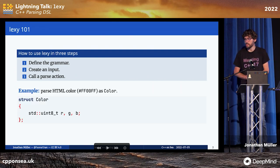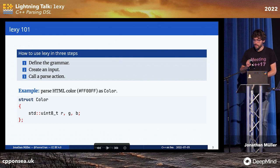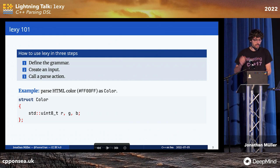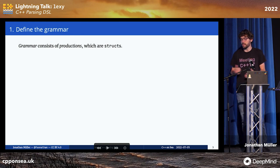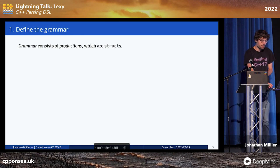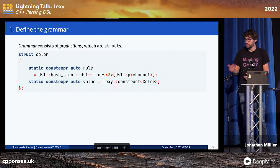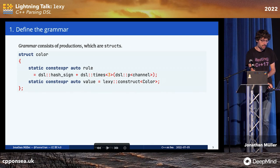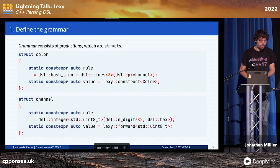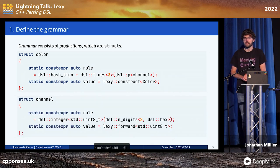We want to parse HTML or CSS color codes using hex notation into a struct. The first step is to define the grammar. A grammar in Lexi consists of productions, which are structs with a special rule member that defines how the production is parsed. In this case, a color is a hash sign followed by three channels — which is another production that simply parses an integer consisting of two hex digits.